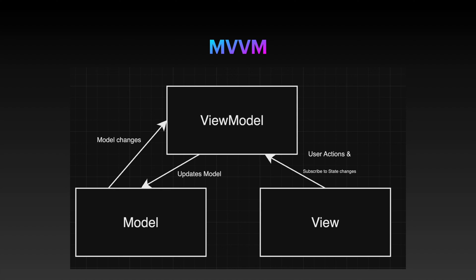Here's a diagram of the typical MVVM structure. We have the view that delegates user action handling to the view model, and very important, subscribes to state changes from the view model. In other words, the view model does not have a direct reference to the view, but uses some observer pattern to notify any listener that is subscribed. This, by the way, is its main difference from MVP.